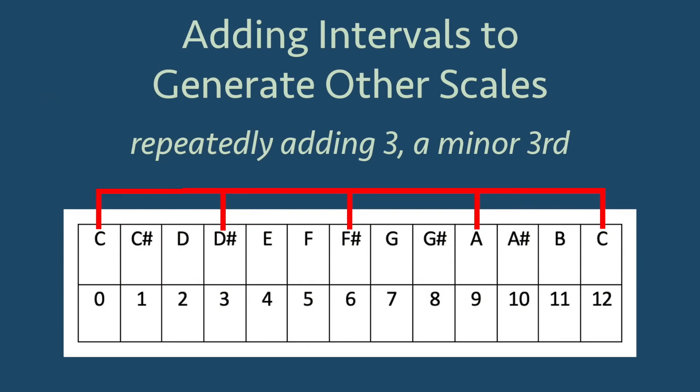If we repeatedly add a minor third, which means starting at C and adding 3, we generate the scale C, D sharp, F sharp, A.